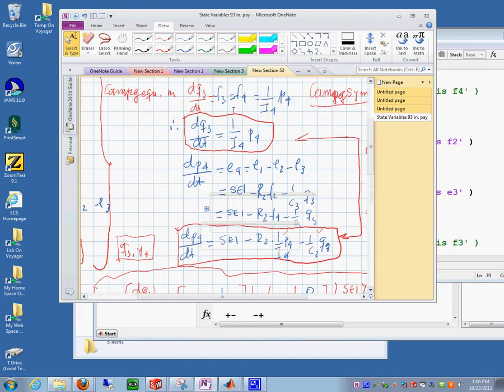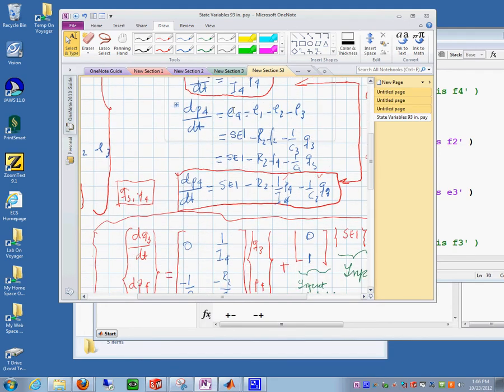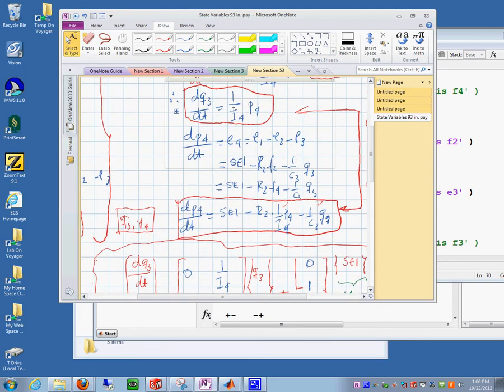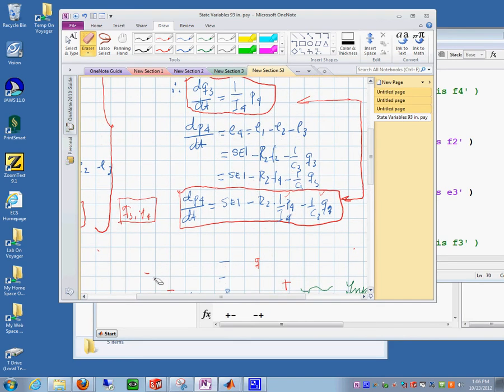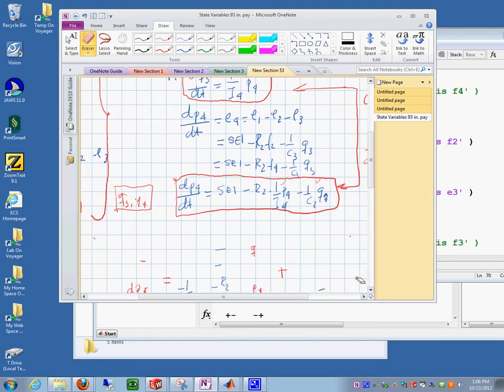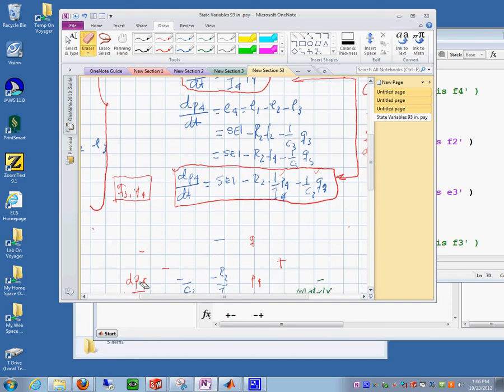And so now my objective is, given these equations, how do I produce the block diagrams? So what I'm going to do is I'm going to erase a few things in here. And then we'll erase all this so that I just use the equations in here to produce the block diagram.